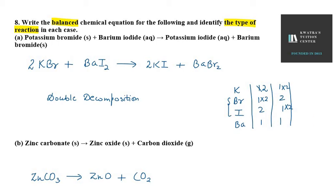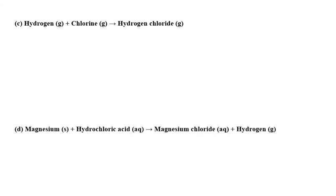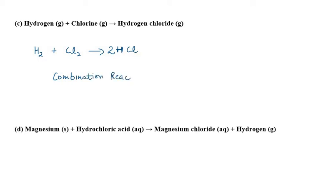Now moving on to Part C. We have hydrogen — H₂ — plus chlorine — Cl₂ — which gives us HCl. H has 2 on the left hand side, Cl has 2 on the left hand side. So we write 2 on the right hand side — 2 HCl. This is a combination reaction because we have 2 reactants and one product.